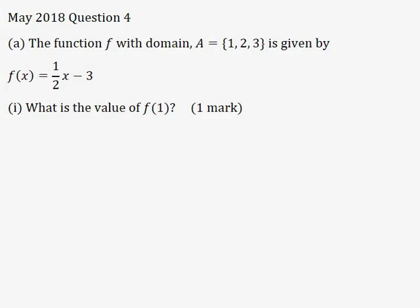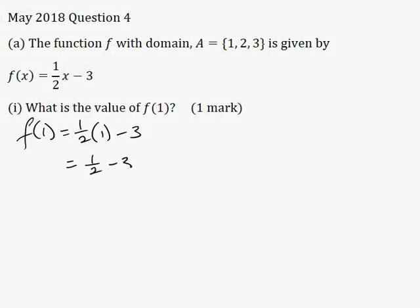Part 1: What is the value of f(1) for one mark? I'll substitute x = 1 into the function f(x) = (1/2)x minus 3. So f(1) = (1/2) multiplied by 1 minus 3. Half of 1 is a half, minus 3 gives minus 2 and a half.